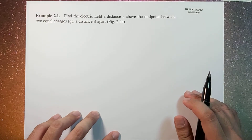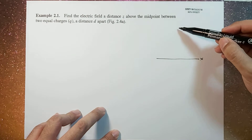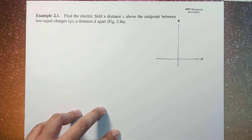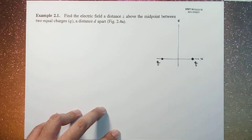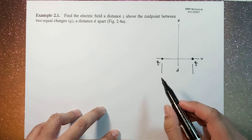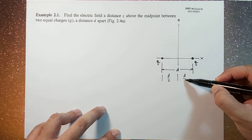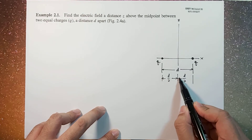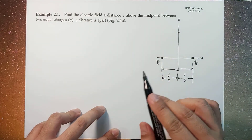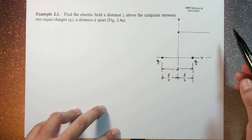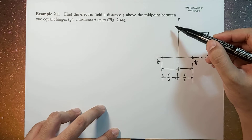Figure 2.4a looks like this. If this is your x-axis and this is your z-axis, the charges are located here — this will be q and q. These two charges are separated by distance d, so from the midpoint this will be d/2 and this is d/2. At this point above, this is where we want to calculate the field, and the distance between these points would be z along the z-axis. So this is our point P.